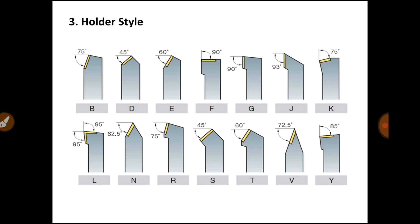The third location denotes the holder style — how the holder approaches during machining. Here you can see various approach angles: 75 degree, 45 degree, 60 degree, 90 degree, 93 degree, with corresponding letters B, D, E, F, G, J, K. These are different styles of the holder. The most widely used are J at 93 degree and L at 95 degree holder style.